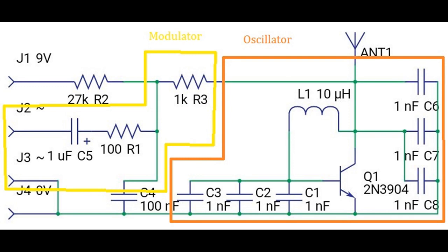On the left hand side we have the modulator, which is basically just feeding the signal in through the 1 microfarad capacitor and the 100 ohm resistor into the power train. Your 9 volt comes in through the 27k resistor and then comes to the junction where the audio comes in, then goes through the 1k and out.